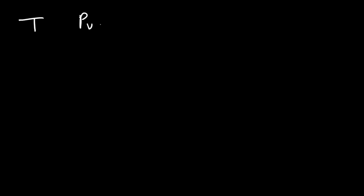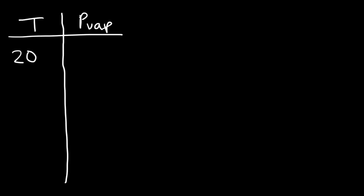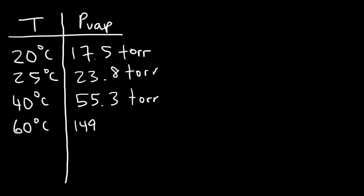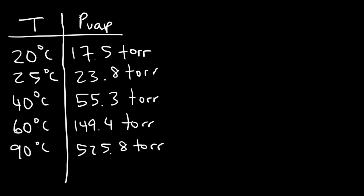Now we need to understand the relationship between temperature and the vapor pressure of water. At 20 degrees Celsius, the vapor pressure of water is 17.5 Torr. At 25 Celsius it's about 23.8 Torr. At 40 Celsius it's 55.3 Torr. At 60 Celsius it's 149.4 Torr. At 90 Celsius it's about 525.8 Torr. At 100 degrees Celsius, the vapor pressure equals the atmospheric pressure, which is 760 Torr.